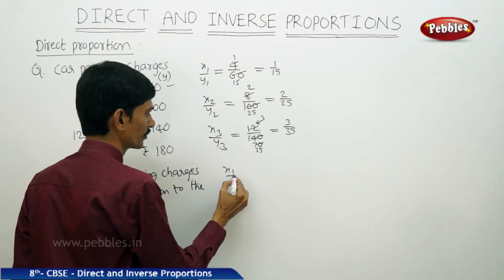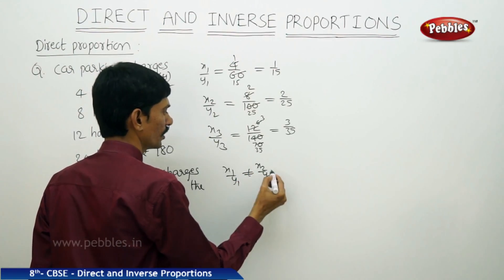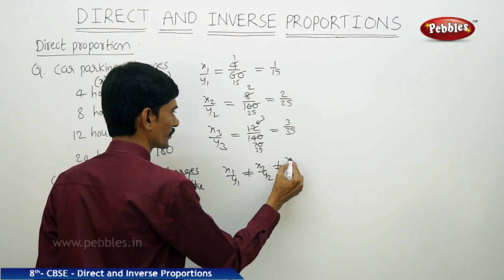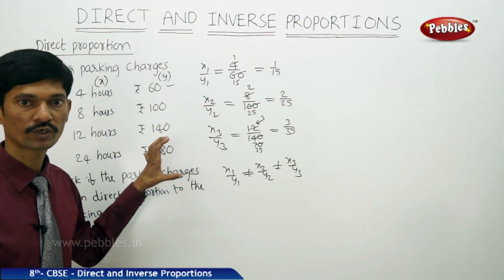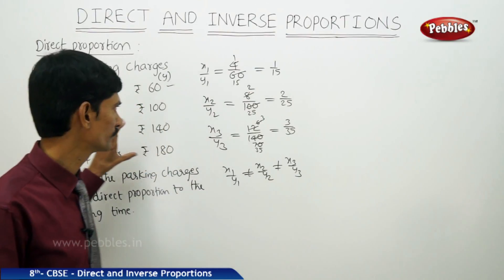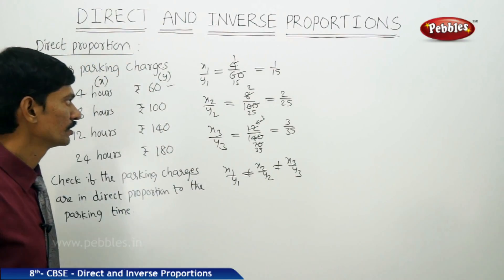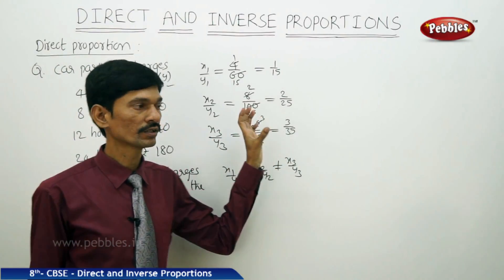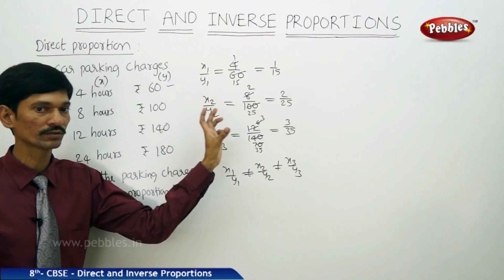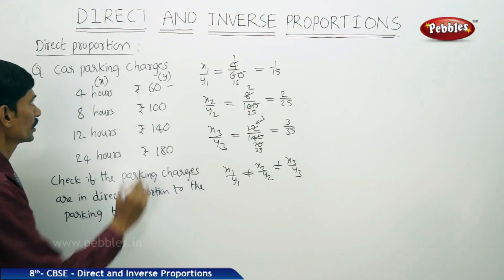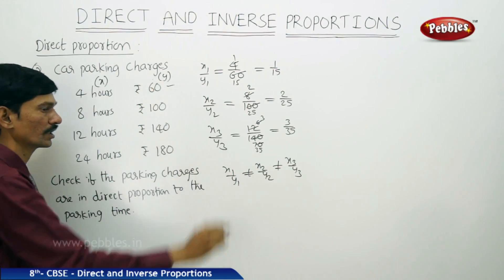Here x1/y1 is not equal to x2/y2, and this is not equal to x3/y3. The ratio between the first quantity and the second quantity is not a constant in all the cases. So we can say that x is not directly proportional to y, meaning the car parking charges are not in direct proportion to the parking time.